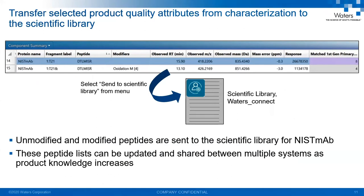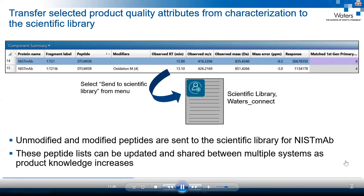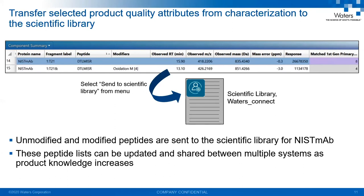Once we finish processing data in the peptide mapping method, we get a table showing the two forms of the Miso peptide — unmodified and oxidized. Scientific library creation is a one-step process: highlight the two forms, right-click, and select 'send to scientific library,' which automatically creates the library. When it creates the scientific library, it stores all detection information including the sequence, modification levels, retention times, mass-to-charge ratios, charge state information, and fragmentation data. A key feature is that it allows users to share libraries between different user groups and systems, and update the library over time.